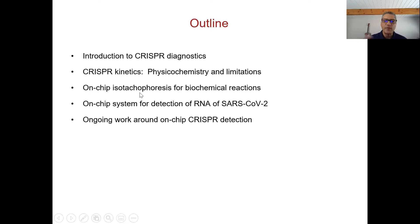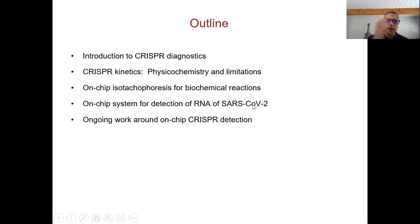Next, I'll introduce the concept of using on-chip electric fields to control and accelerate biochemical reactions. We use a process called isotachophoresis — a method of increasing and focusing select species by their mobility. Then I'll summarize our work on detection of SARS-CoV-2 RNA by isothermal amplification followed by CRISPR detection, and show ongoing work to make these systems more automated and integrated.